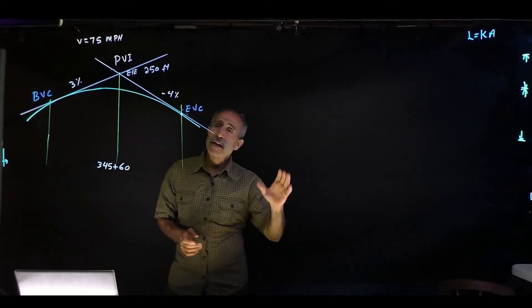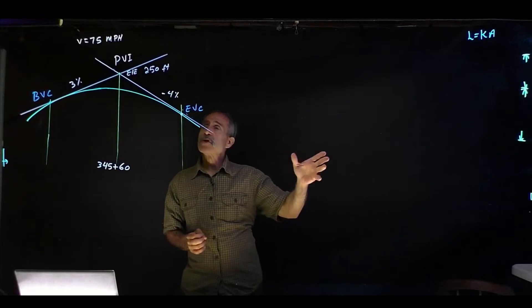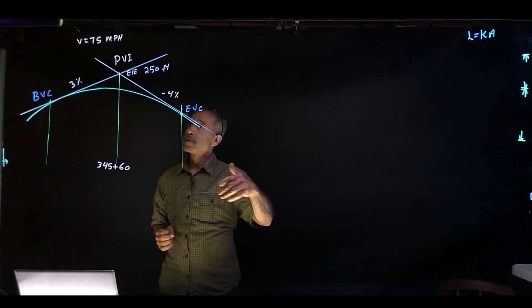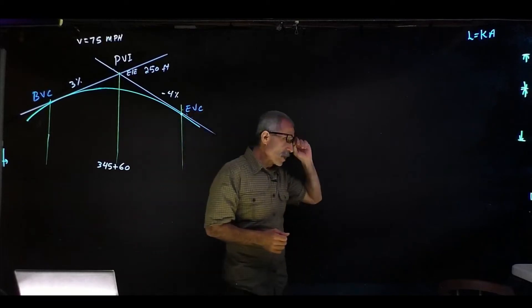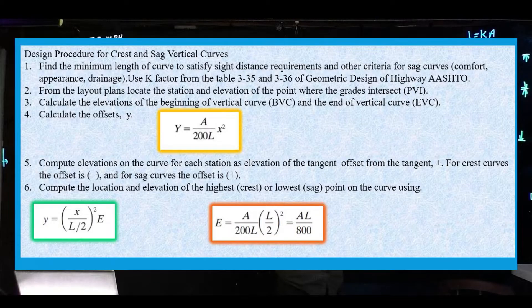Take a look at the procedure that we have. We're going to follow step by step. The first thing we're going to do is find the minimum length of the curve to satisfy the sight distance requirement.